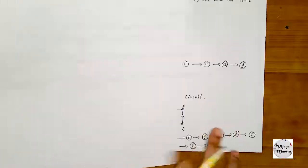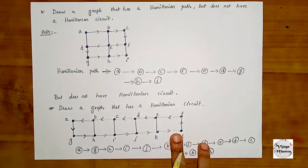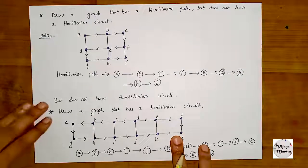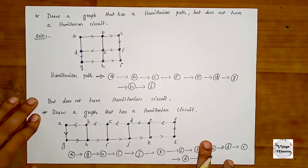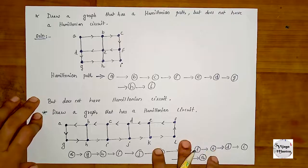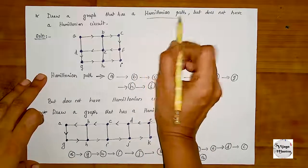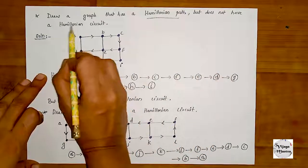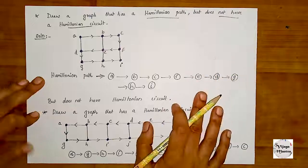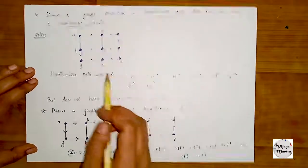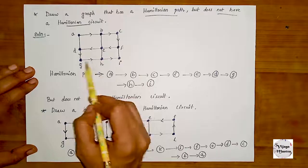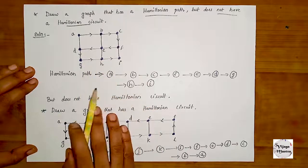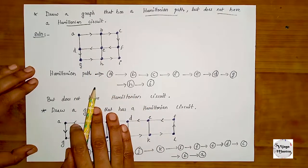Now we have a problem: draw a graph that has a Hamiltonian path but does not have a Hamiltonian circuit. Here we have another example — a graph with vertices A, B, C, D, E, F, G, H, I. In this graph, there is a Hamiltonian path, but it does not have a Hamiltonian circuit.